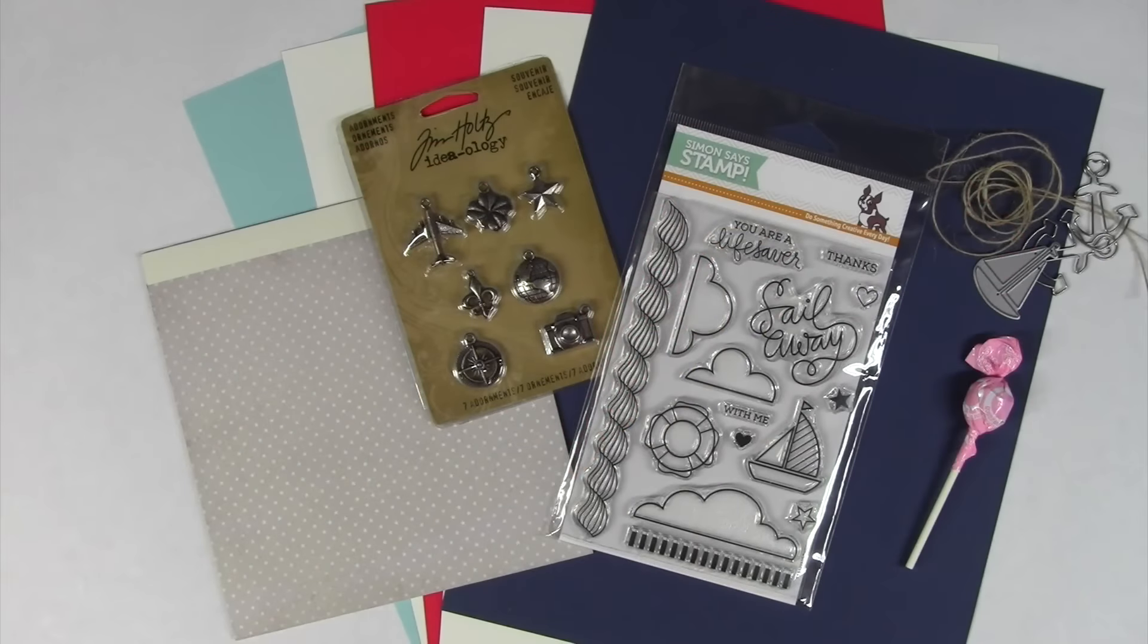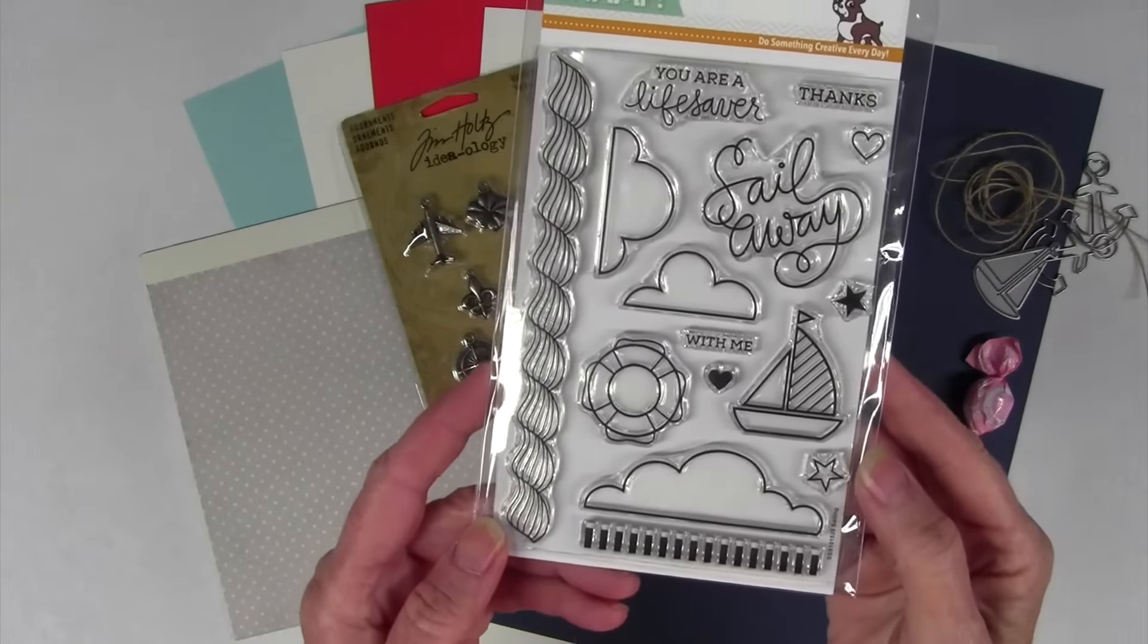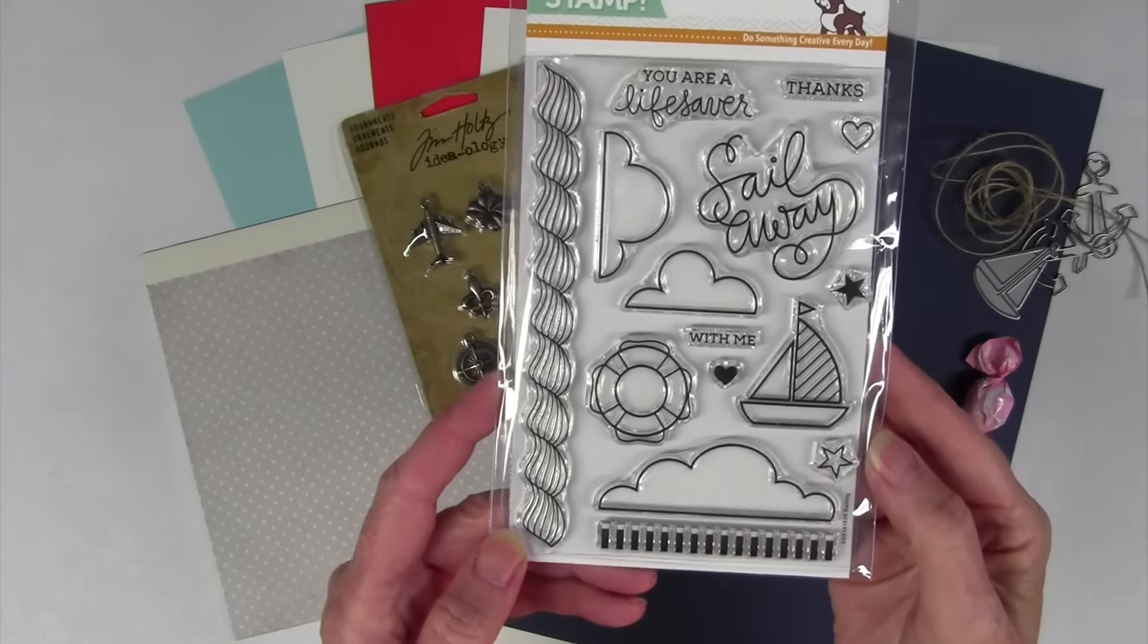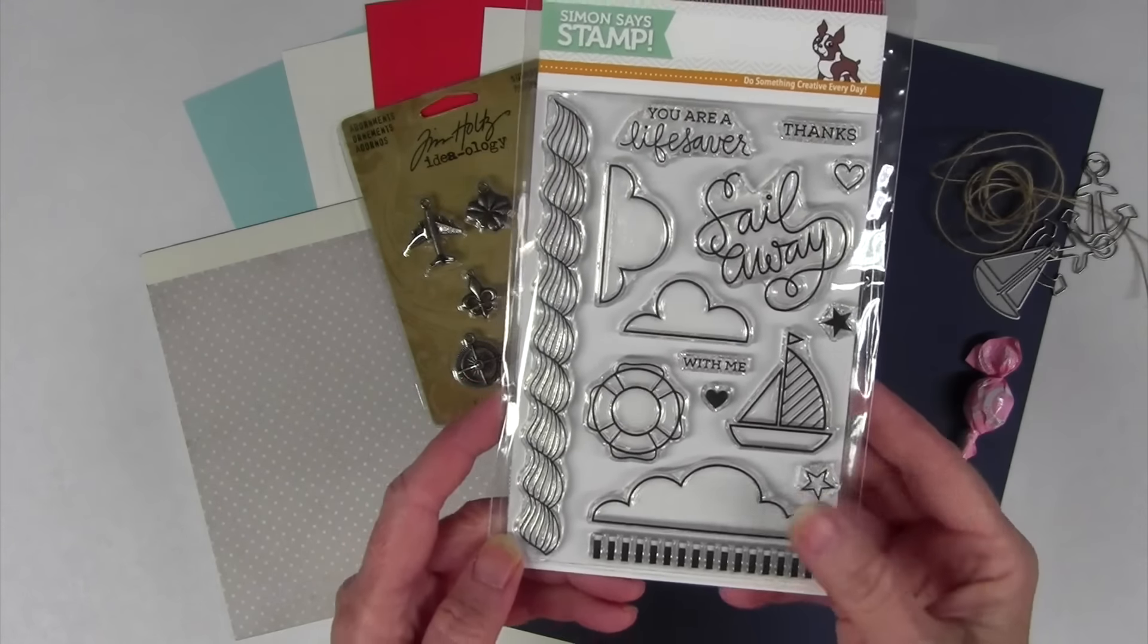This kit definitely has a nautical theme to it and to start off I'll show you the stamp set called Sailing. It has wonderful waves, borders, some clouds, a sailboat, life preserver and stars, and also sail away.